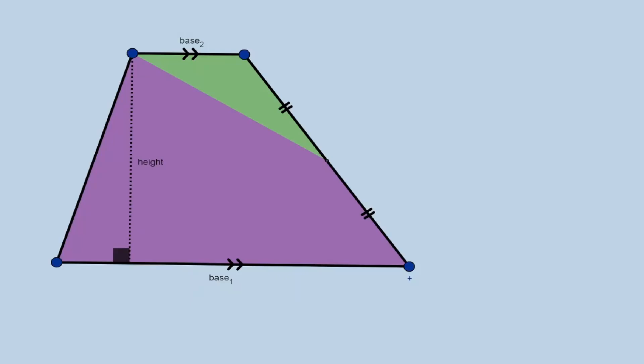Welcome. Let's discuss the area of a trapezoid. A trapezoid is a four-sided figure where there's only one pair of parallel lines.